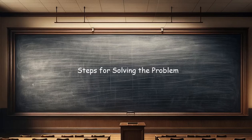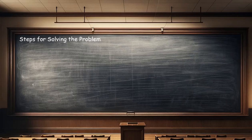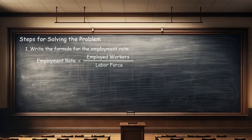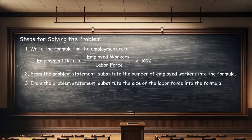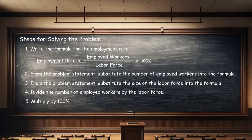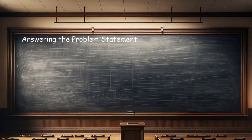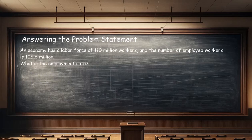Before looking at calculating the employment rate, let's look at the process using the percentage formula. Step 1: write the formula for the employment rate — employment rate equals the number of employed workers divided by the labor force times 100%. Step 2: from the problem statement, substitute the number of employed workers into the formula. Step 3: substitute the labor force into the formula. Step 4: divide the number of employed workers by the number of workers in the labor force. Step 5: multiply by 100%.